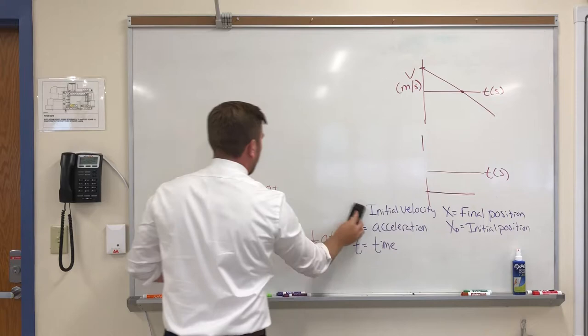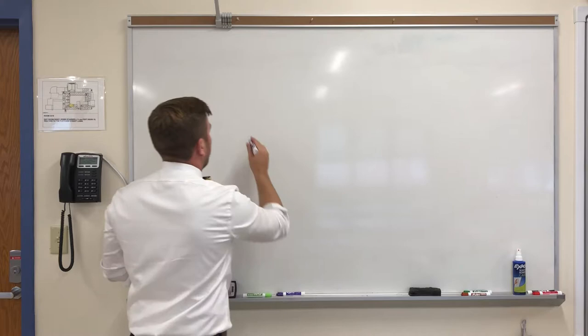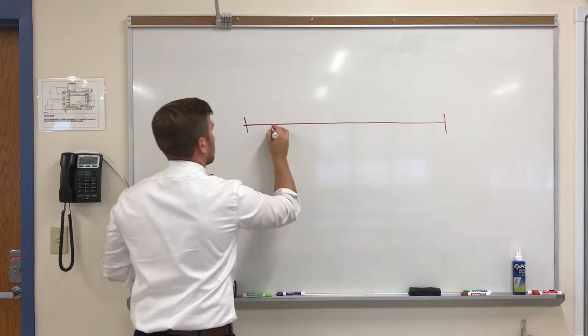But we also have something called a motion map. Motion mapping is new for pretty much everybody in class. But here's how it's going to work. You're going to have a line. And that line is going to represent time.